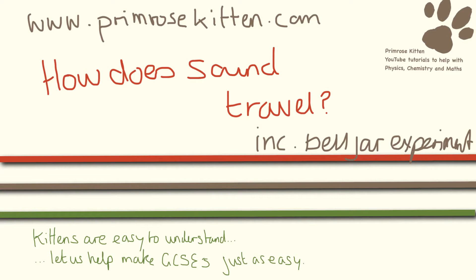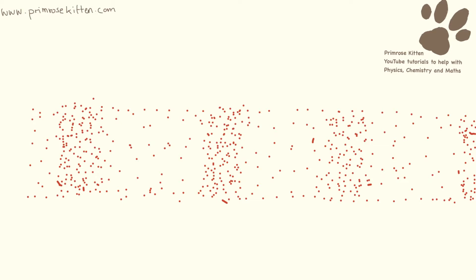How sound travels is really easy to demonstrate. The important thing we need for sound to travel is air, because when we make a sound — whether it's made from our vocal cords or whether it's made from something else — what we're actually doing is vibrating the air particles around us. And as these air particles bump into these ones, they pass the vibration along.